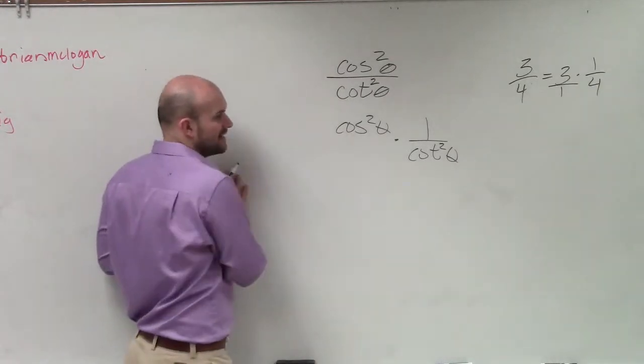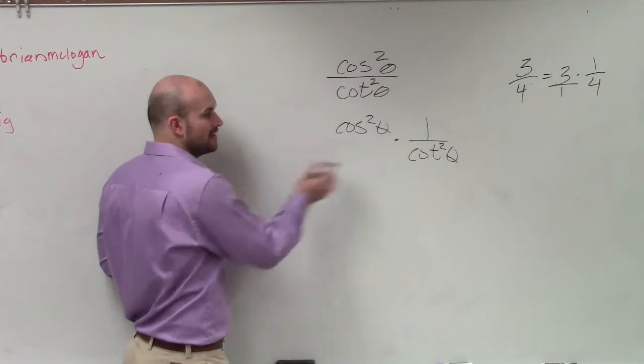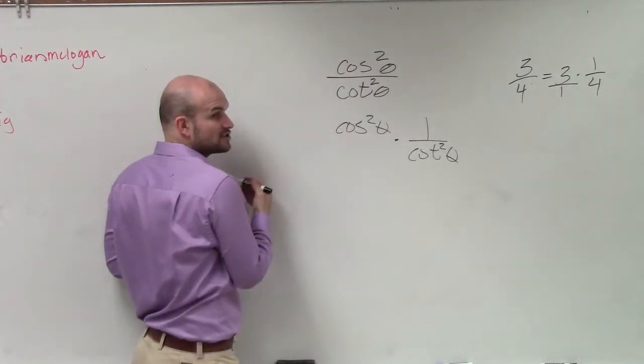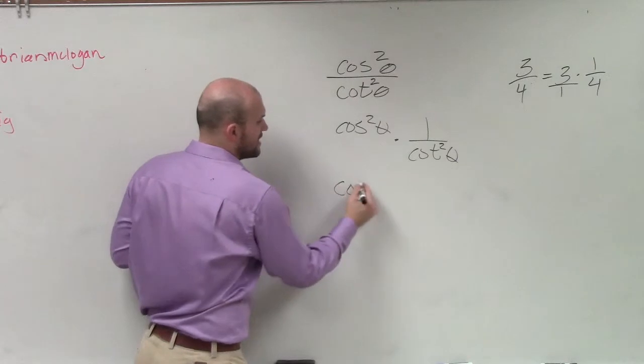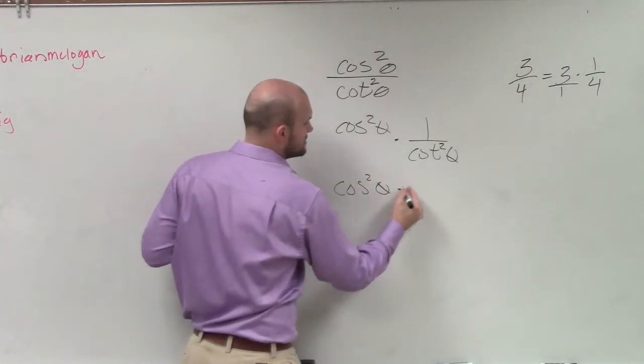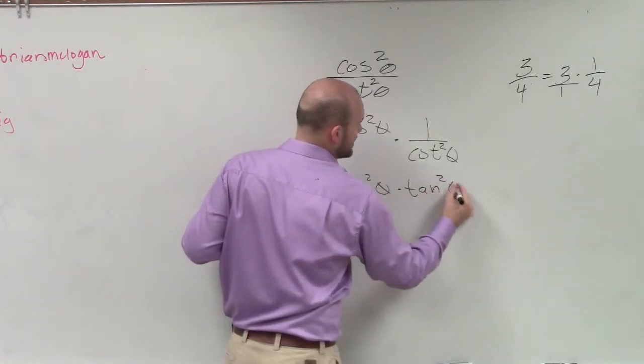So if I have cosine squared theta times 1 over cotangent squared, well, I know I can rewrite 1 over cotangent squared as tangent squared. So I have cosine squared of theta times tangent squared of theta.